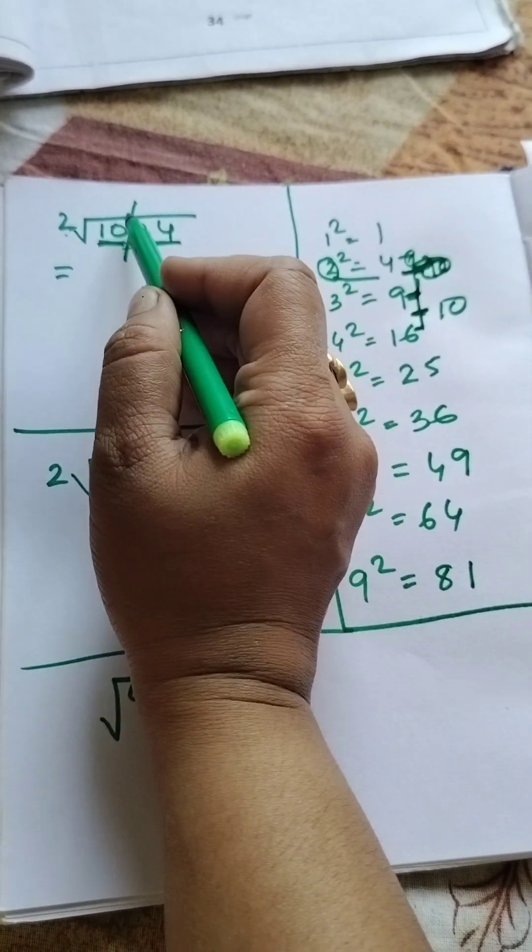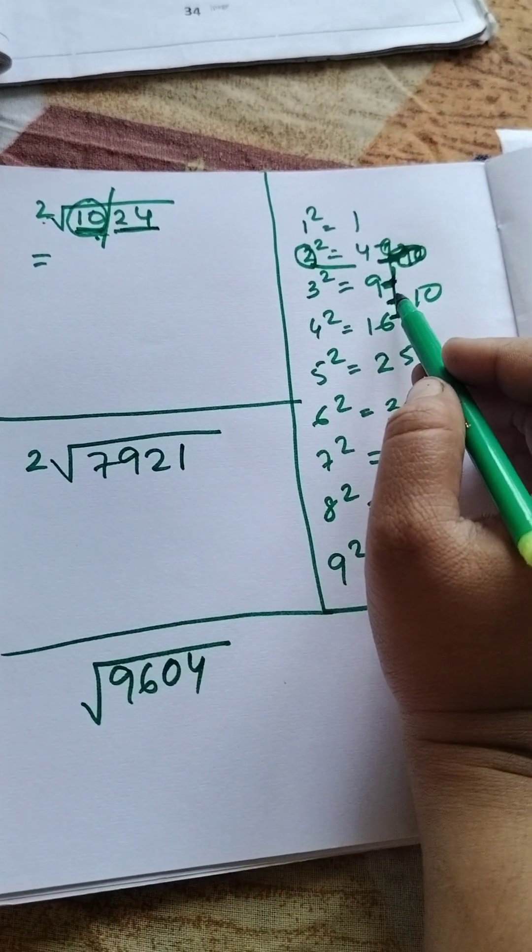Take the number in pairs. You have to take two pairs. The first number is 10. Where is 10 situated?